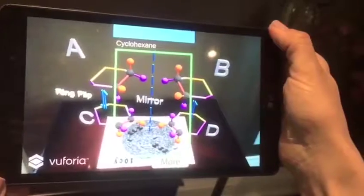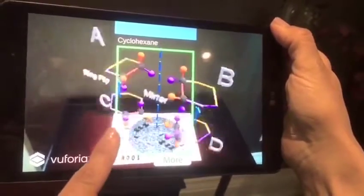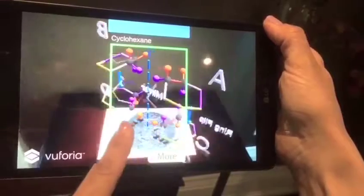This next augmented reality image is the cyclohexane chair, its mirror image, as well as the ring flip version of each, which you can visualize from different angles.